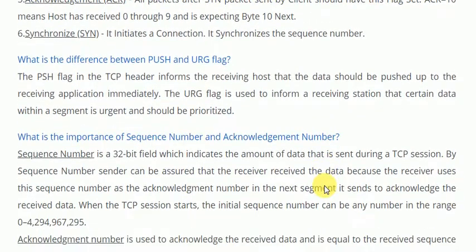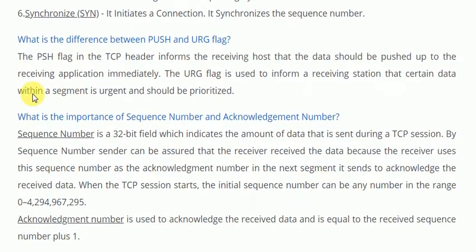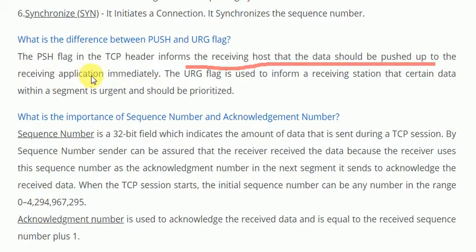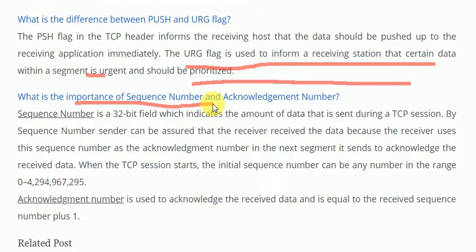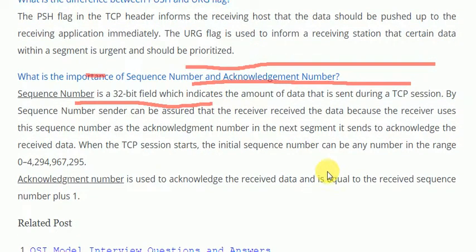The next question is: what is the difference between the Push and Urgent flags? The PSH (Push) flag in the TCP header informs the receiving host that data should be pushed up to the receiving application immediately. The Urgent flag is used to inform a receiving station that certain data within the segment is urgent and should be prioritized.